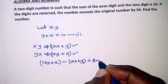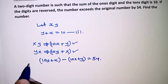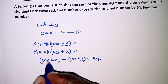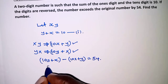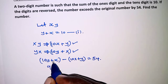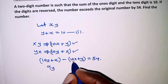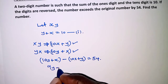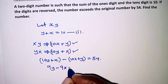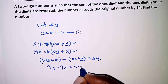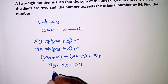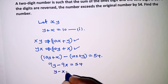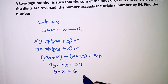Opening the brackets and simplifying: 10Y minus Y gives 9Y, and X minus 10X gives minus 9X, and that is equal to 54. Dividing all through by 9, we get Y minus X equals 6. This is the second equation.